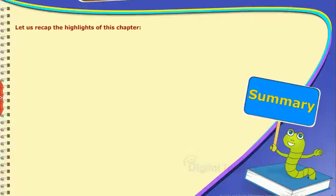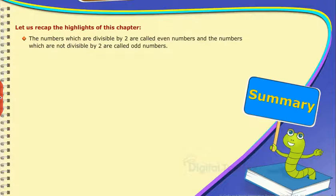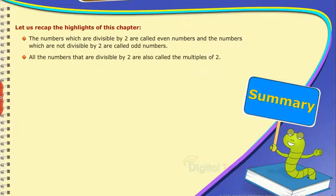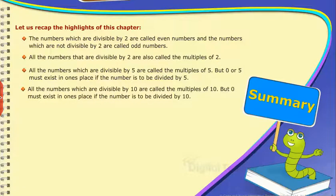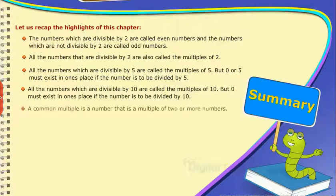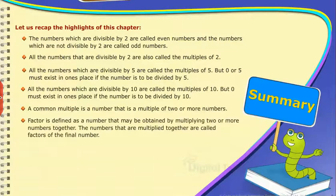Summary: Let us recap the highlights of this chapter. The numbers divisible by 2 are called even numbers; those not divisible by 2 are called odd numbers. All numbers divisible by 2 are also called multiples of 2. Numbers divisible by 5 are called multiples of 5 — zero or five must exist in the ones place. Numbers divisible by 10 are called multiples of 10 — zero must exist in the ones place. A common multiple is a number that is a multiple of 2 or more numbers. A factor is a number obtained by multiplying two or more numbers together; the numbers multiplied are called factors of the final number.